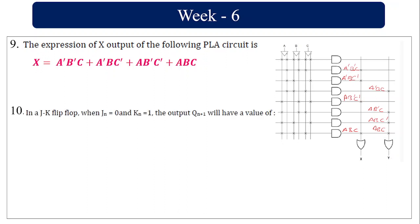In a JK flip-flop, when J equal to 0 and K equal to 1, the next output is 0 (reset). When J equal to 1 and K equal to 0, the next output is 1 (set).